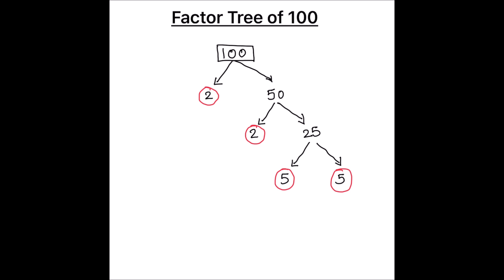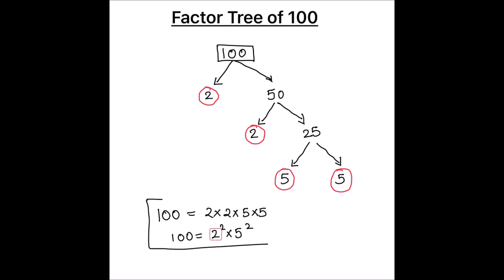This completes the factor tree of number 100. All the numbers which are circled are prime numbers and these are all the prime factors of 100. The factors of 100 are 2 × 2 × 5 × 5, or in exponent form we can write it as 2² × 5². This is how we draw the factor tree for number 100.